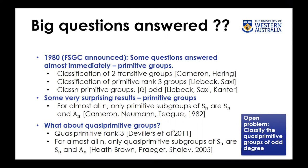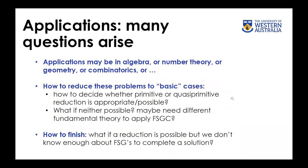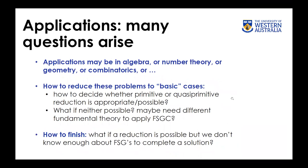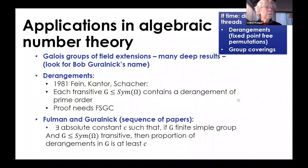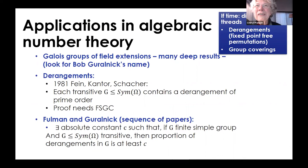A question is raised about whether the constant c bounding the proportion of derangements in the Fulman-Guralnick result is explicit. The speaker is uncertain of the exact value across the scattered papers but believes it is known. Scott (an audience member) confirms that it is indeed known and is a very small explicit number.